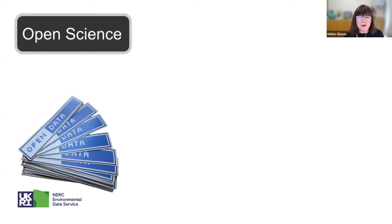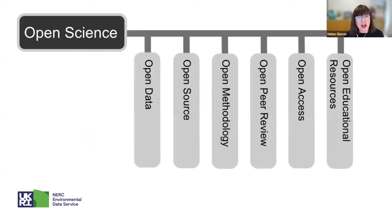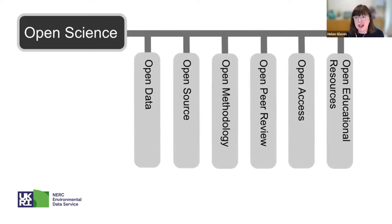What is open science? A lot of people think that open science is just open data, but actually open science is far more. Open science is actually open data, but it's also open software, open methodology, open peer review, open access journals, and also open educational resources for the next generation of researchers.